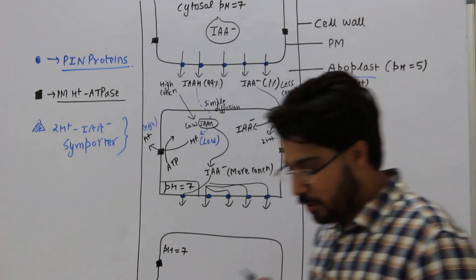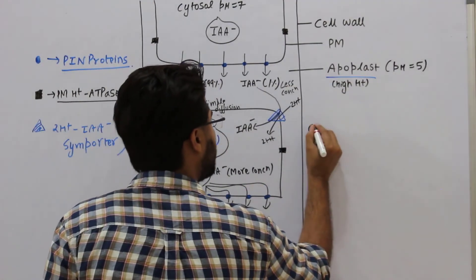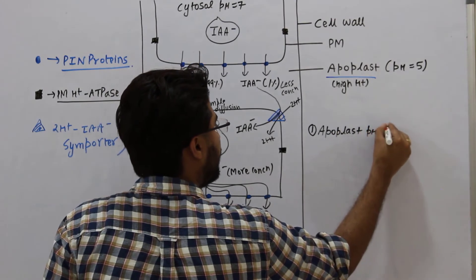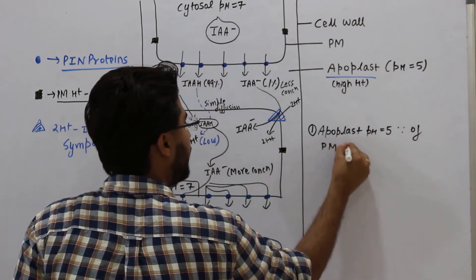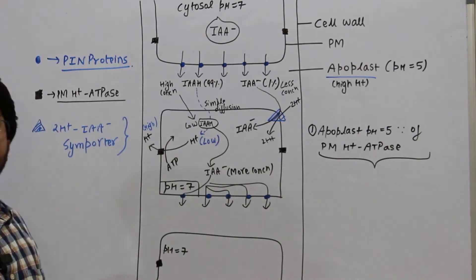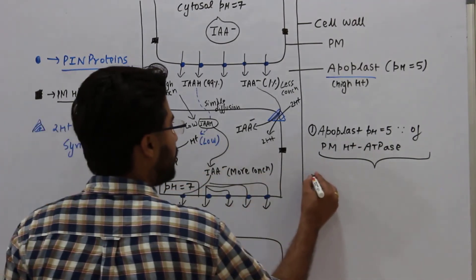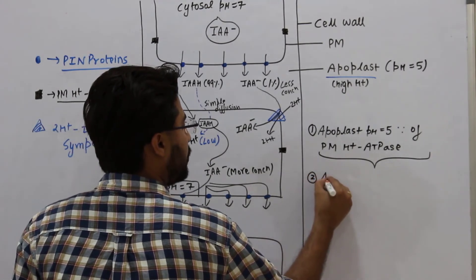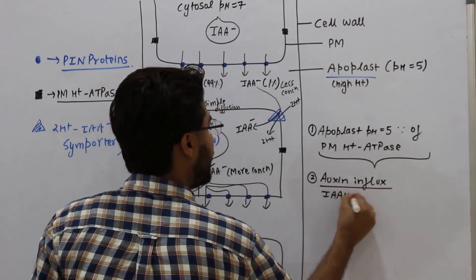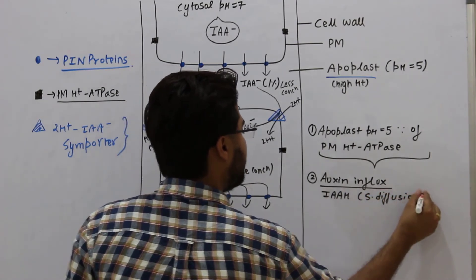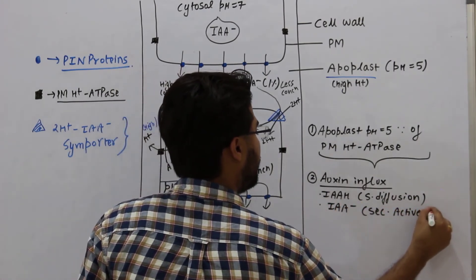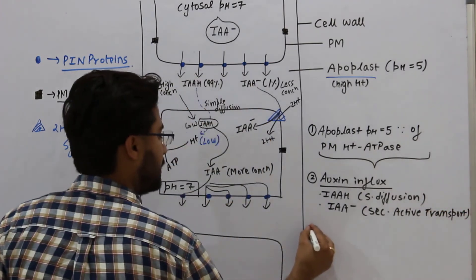Compiling the key points: First, apoplast pH equals 5 because of the plasma membrane H⁺-ATPase. Second, auxin influx — for IAAH it happens via simple diffusion; for IAA⁻ it happens via secondary active transport.